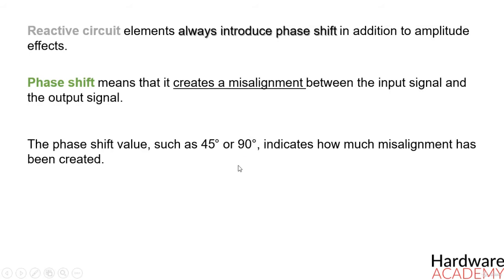Each reactive element in a circuit introduces 90 degrees of phase shift. But this phase shift does not happen all at once.